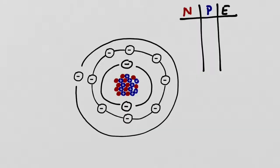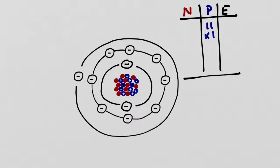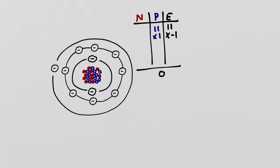Let's figure out the impact of jettisoning this electron. Currently we have 11 protons, each with a charge of positive one, and 11 electrons, each with a charge of negative one. The positive and negative charges balance each other perfectly, so we have a net charge of zero. This atom is unhappy in this state, however, because it doesn't have a full outer shell — it hasn't satisfied the octet rule.